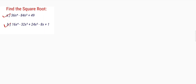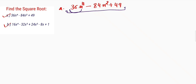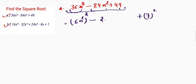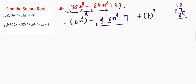First I will take the first question. If I look at this question, I can see that the first term can be written as 6n² whole square, and the third term 49 can be written as 7 square. So here I can write the middle term as 2 into 6n² into 7. If I multiply 2 with 6 I get 12, and 12 into 7 is equal to 84, giving me this middle term.